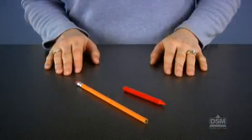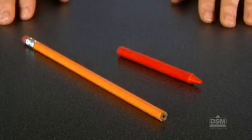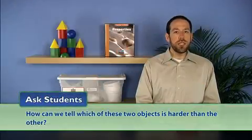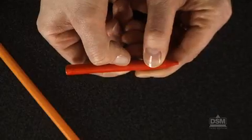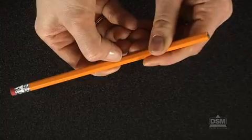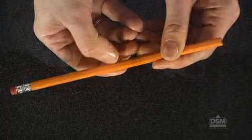Then, hold up a crayon and a pencil and ask the students, how can we tell which of these two objects is harder than the other? Invite a volunteer to test the relative hardness of the crayon and pencil by trying to put a dent in one using a fingernail, and have the volunteer identify the object that was harder to dent, the pencil.